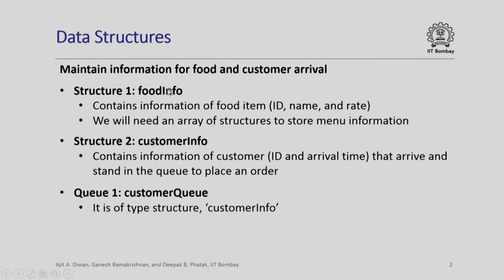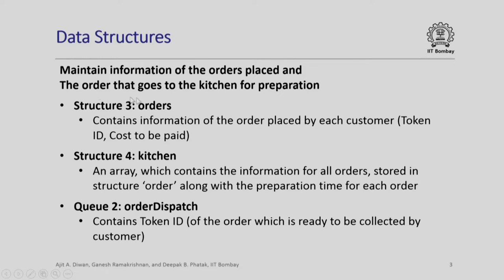The data structures required first will be information to be stored for food and customer arrival. One structure we use is food_info, which contains the food item name and rate. We will need an array of structures to store the complete menu information. Another structure we will require is customer_info, which contains information of customer ID and arrival time — this is the order in which they arrive and stand in the queue to place an order.